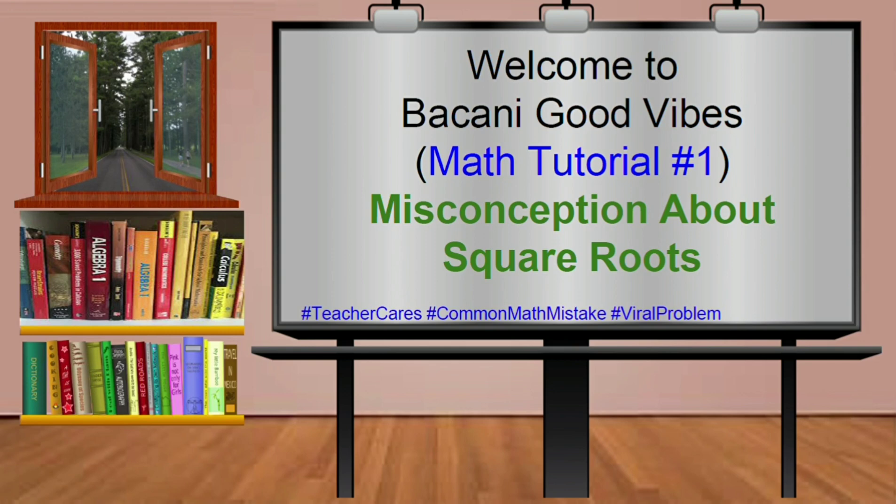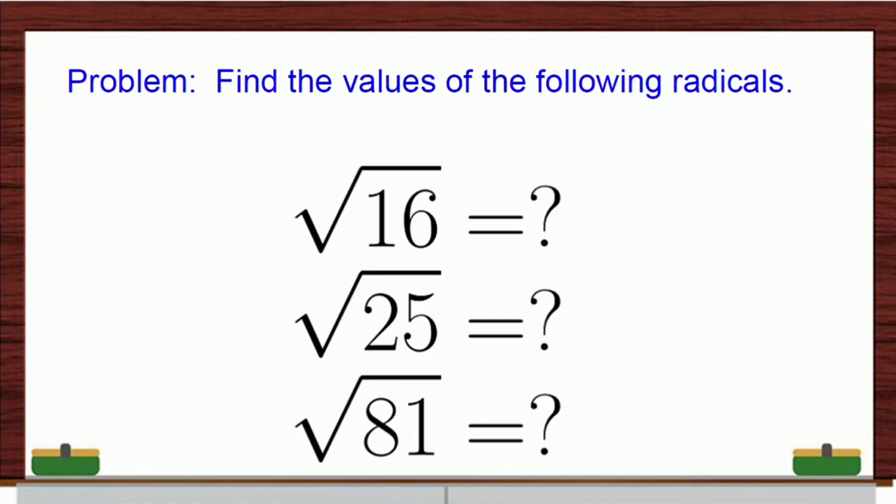Why are we doing this? Because, of course, everyone commits mistakes, but we need to correct that mistake and learn from it. Do you agree? But without further ado, let's show the problem. So, for instance, we have this problem. Find the values of the following radicals: radical of 16, radical of 25, and radical of 81. What are the values of these radicals?